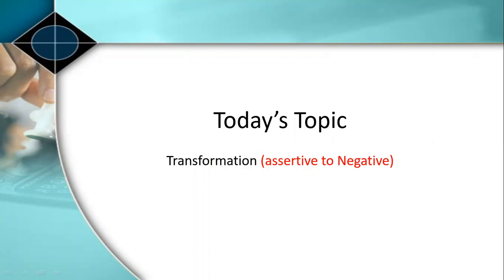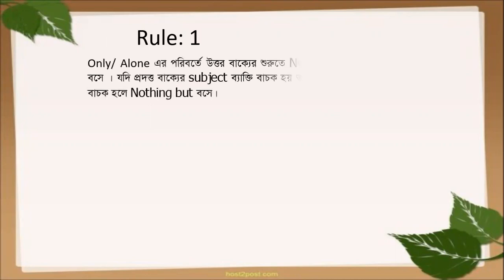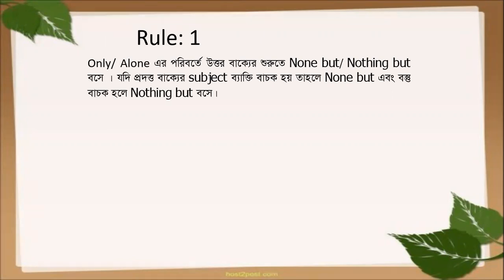Let's go through the rules. The first rule involves the word 'only' or 'alone'. When we see 'only' or 'alone' in an affirmative sentence, the rule is to replace it with 'none but' or 'nothing but' to form the negative sentence.